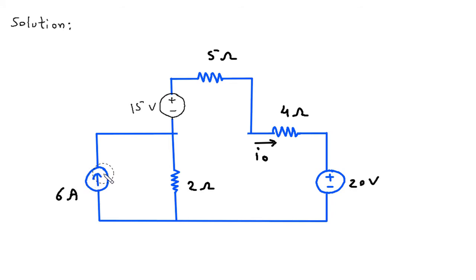Also we will convert this current source into its equivalent voltage source. So here, this will be positive and this will be negative. So 6 into 2 is 12V.